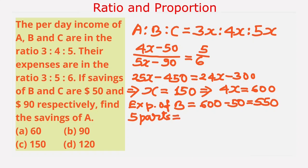5 parts equal 550, giving us 550 divided by 5 equals 110, which is 1 part. Therefore 3 parts is 330. This is the expenses of A.